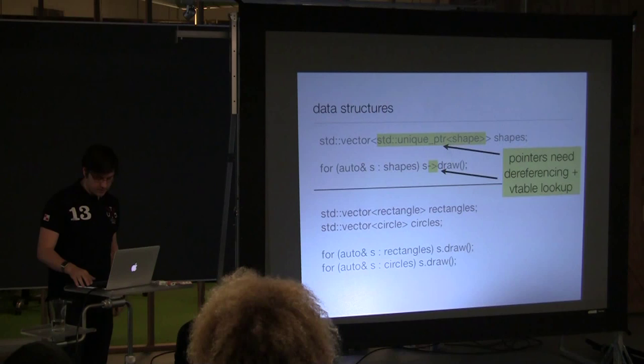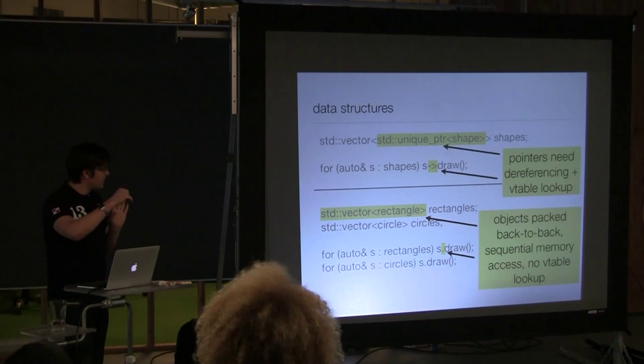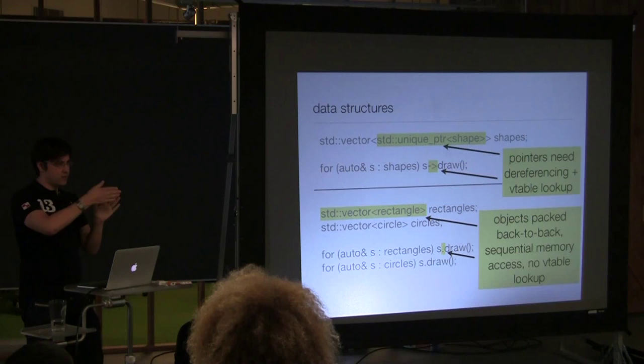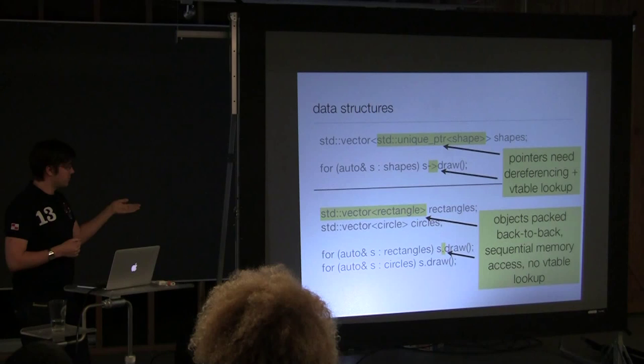On the other hand, if you have two vectors, all of the objects are going to be packed back to back in memory. Very, very efficient. And when you loop over them, you're going to read sequentially in RAM. So the prefetcher is going to be able to do a very good job. When you call draw, it's not going to be a virtual function call. It's going to be a static call. So the branch predictor is going to have a much easier time to know what's going on. It's going to be able to prefetch.